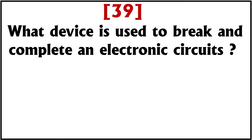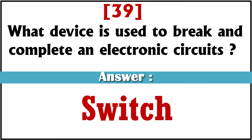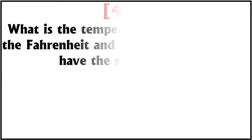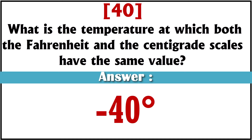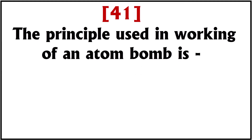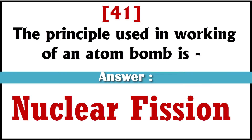What device is used to break and complete an electronic circuit? Answer: Switch. What is the temperature at which both the Fahrenheit and centigrade scales have the same value? Answer: Minus 40 degrees. The principle used in the working of an atom bomb is? Answer: Nuclear fission.